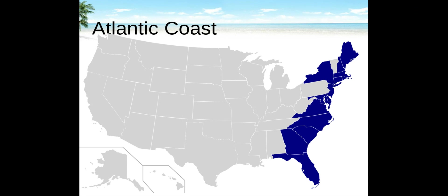Nor'easters can generate storm waves up to six meters. The average Atlantic coast erosion rate is 0.8 meters (2.6 feet) per year, with the sea migrating landward. Delaware, New York, and Georgia have the most serious erosion problems. Northern Maine is still rebounding from the last ice age and sea level there is dropping.